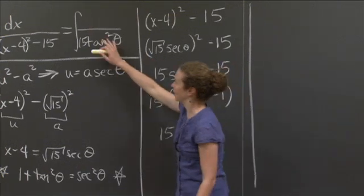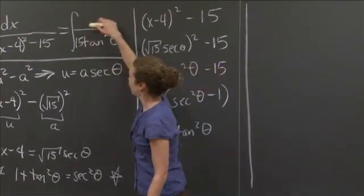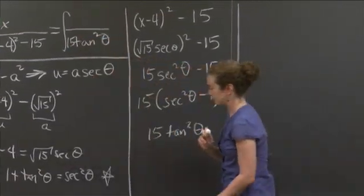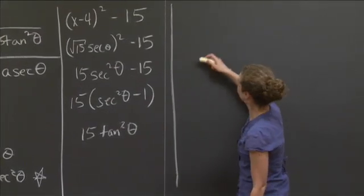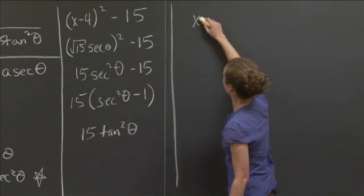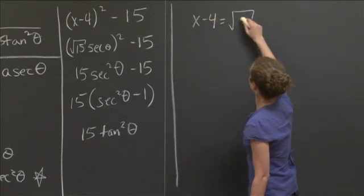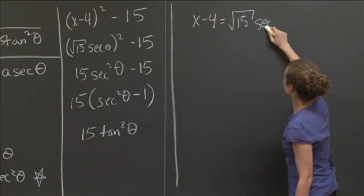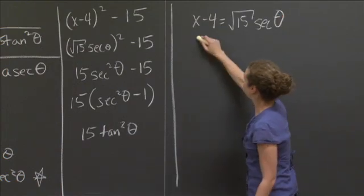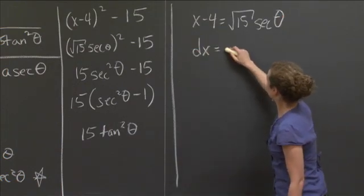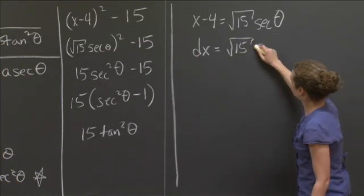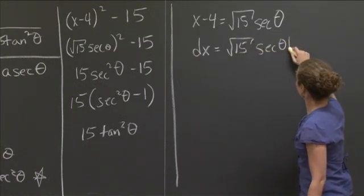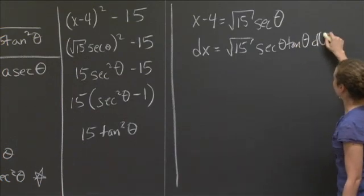And to do that, we again use the substitution that we made, which is just above the star expression. It was that x minus 4 equals square root 15 secant theta. This is going to allow us to find what d theta is in terms of dx. Okay? So let's do that. So I'm not done, by the way. Over here, I'm not done. I've got a little gap. I've got to fill in in the numerator. So let's come back over here. So now we have x minus 4. Let me just write that one more time.